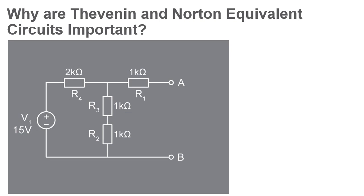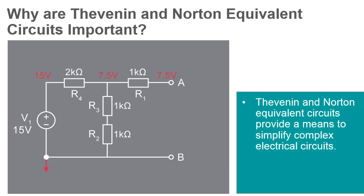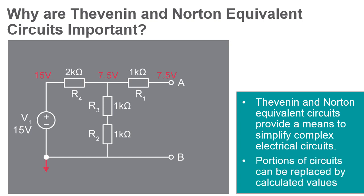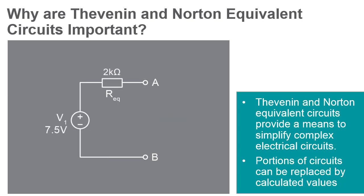Thevenin and Norton equivalent circuits provide a means to simplify complex electrical circuits by allowing portions of some circuits to be replaced by calculated equivalent values. This reduces the time it takes to calculate how changes to a load will affect the rest of the circuit, and simplifying equations also reduces the chances for errors.